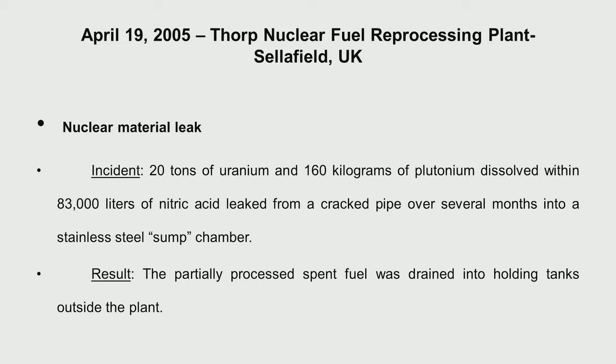Then the reprocessing plant at Sellafield: 20 tons of uranium and 160 kg of plutonium were dissolved in a large amount of nitric acid, but there was a pipe which was leaking for several months. It was within a stainless steel sump and was getting into another sump outside the plant. When the radioactivity increased, people realized something had happened inside the plant but there was not much to worry about. We will look at accidents with a lesser degree of severity in the next lecture.